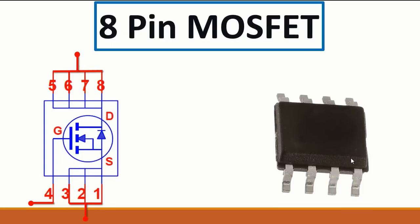Let's continue with the 8-pin MOSFET. As you can see, the MOSFET has four terminals: drain, three sources, and one gate. Pin number one, two, and three are sources, and pin number four is for the gate. The other pins are for drain. If you use the multimeter in buzzer or continuity mode and check those four drain pins, you will get a buzzer or a very low resistance.